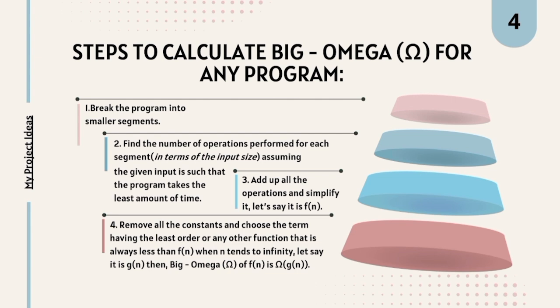That means you look at the summation of all operations as N tends to infinity, and you represent it as Big Omega of G of N.